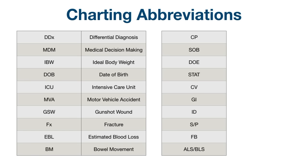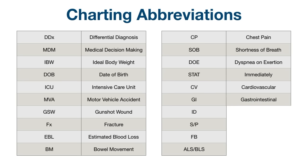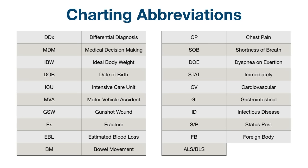BM: bowel movement. CP: chest pain. SOB: shortness of breath. DOE: dyspnea on exertion. STAT: immediately. CV: cardiovascular. GI: gastrointestinal. ID: infectious disease. SP: status post. FB: foreign body. ALS or BLS: advanced or basic life support.